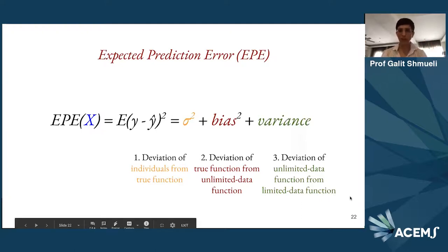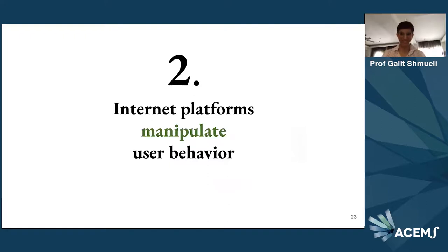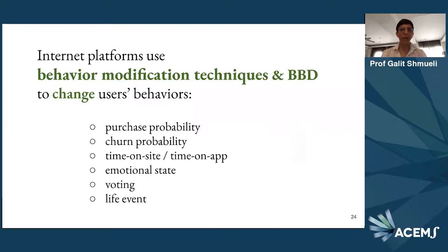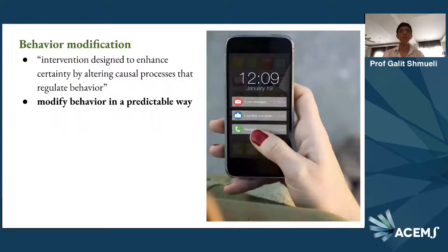Now forget prediction — we're talking about manipulating user behavior. Internet platforms can manipulate us very well. If you have notifications turned on on any of your apps, you know it. What kind of behaviors do they try to change? Same kinds of things as in prediction: purchase probability, churn probability, how long we spend on the site or app, emotional states. They can filter out more of the sad content that your friends are posting. They can affect our voting and life events as we've all seen. They do this using methodologies and techniques from psychology called behavior modification.